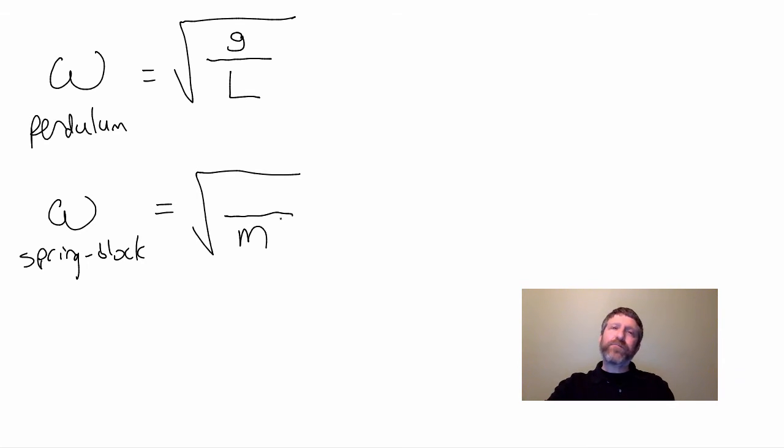What's the other factor? The spring constant. If the spring is very stiff, it'll go back and forth faster. So it's k over m.